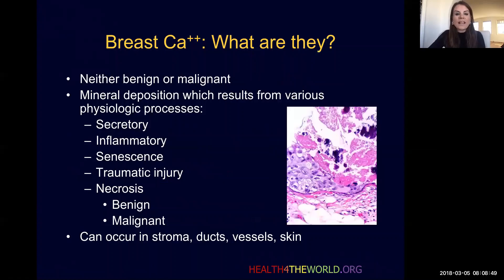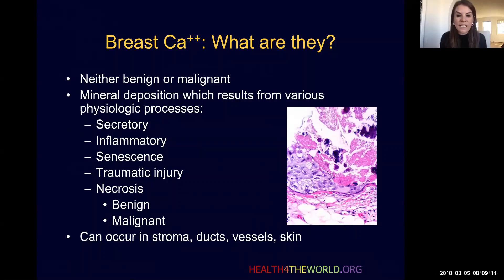So what exactly are calcifications? The calcifications we see on mammography themselves are neither benign nor malignant. What they represent is mineral deposition within the breast resulting from various physiologic processes such as secretory, inflammatory, traumatic, and necrosis. And this is where we have either benign or malignant calcifications.